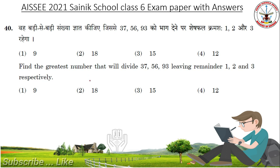Find the greatest number that will divide 37, 56 and 93, leaving remainders 1, 2 and 3 respectively. Answer is 18.